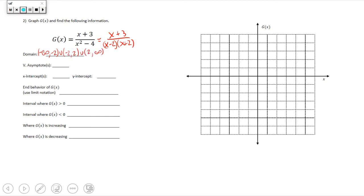The domain restrictions result in vertical asymptotes, so the vertical asymptotes are at x equals 2 and x equals negative 2. Those will be vertical dotted lines on our graph.